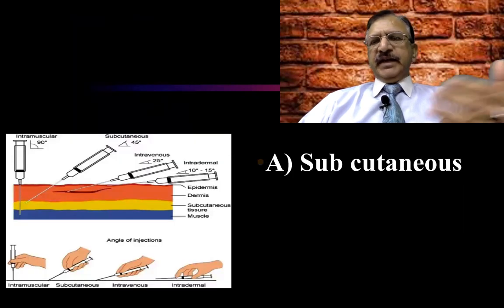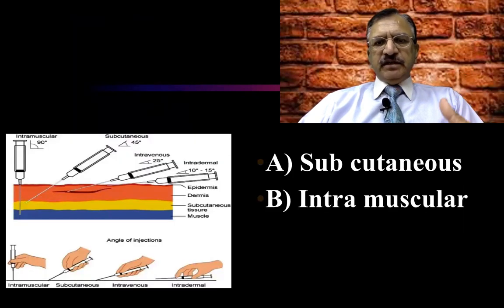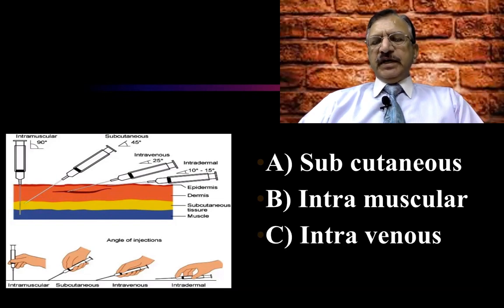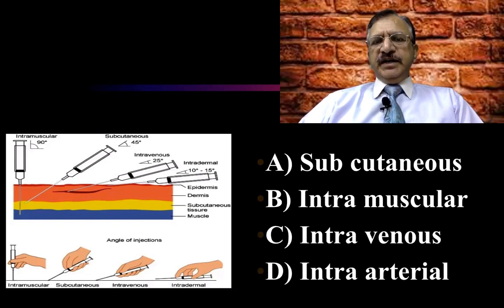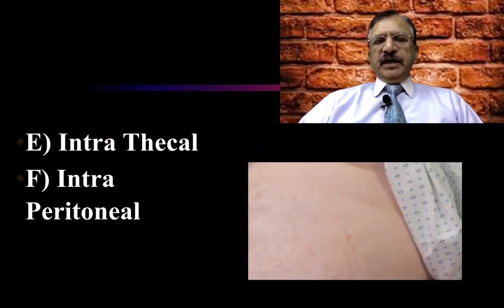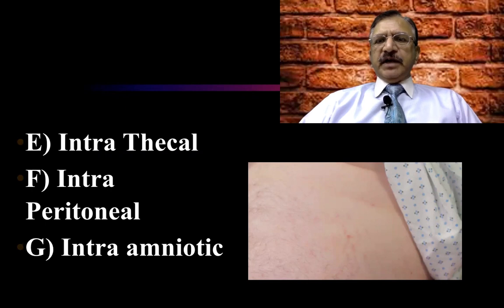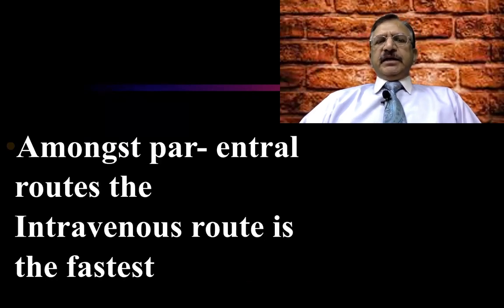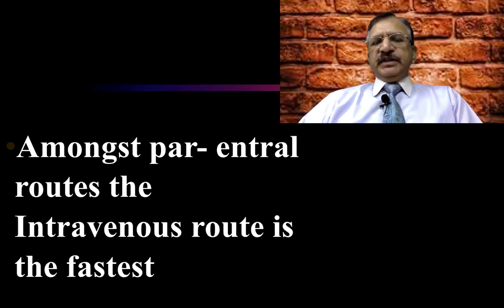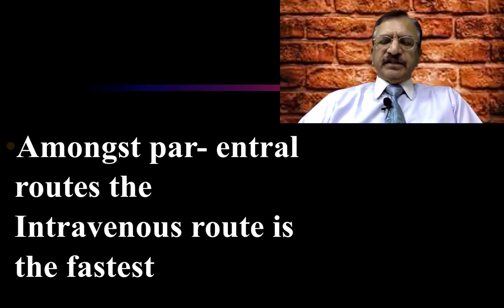Parenteral routes include subcutaneous, intramuscular, intravenous, intra-arterial, intrathecal, intraperitoneal, and intra-amniotic. Among the parenteral routes, the intravenous route is the fastest route.